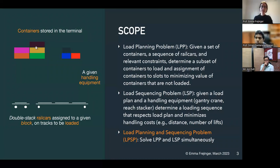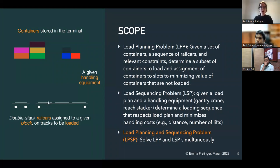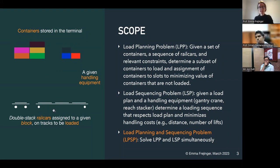We have a set of containers stored in the terminal that can go to this destination on a given train service. Typically, there are more containers in the terminal than there is capacity on the rail car, so we need to select a subset of those containers. We do that using some handling equipment — a gantry crane or a reach stacker vehicle. So for the LPP, I'm ignoring the exact stacking of containers in the terminal; I'm selecting a subset and assigning them onto the rail cars into specific bottom or top slots.